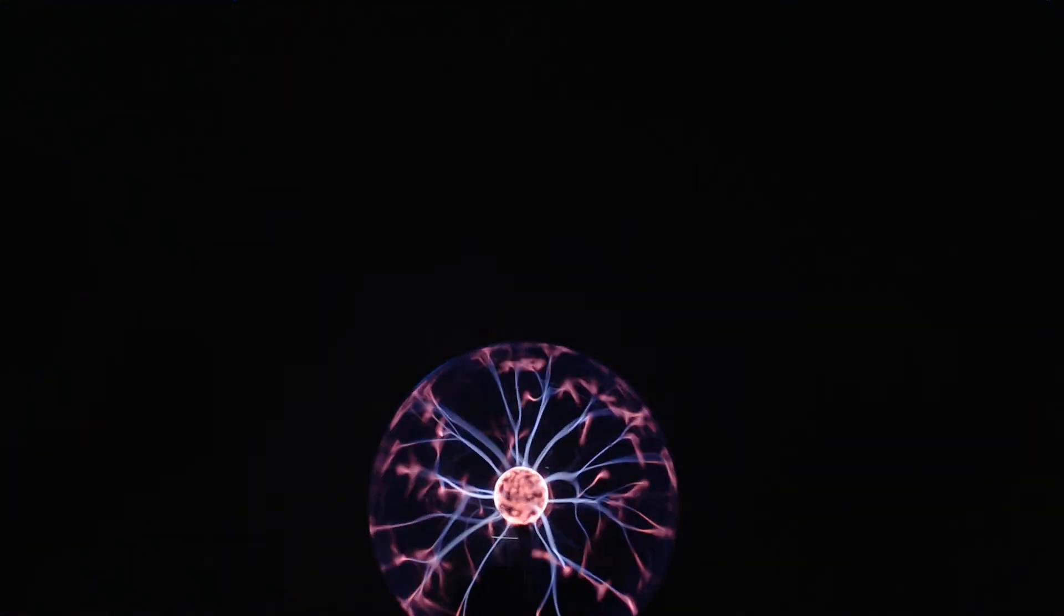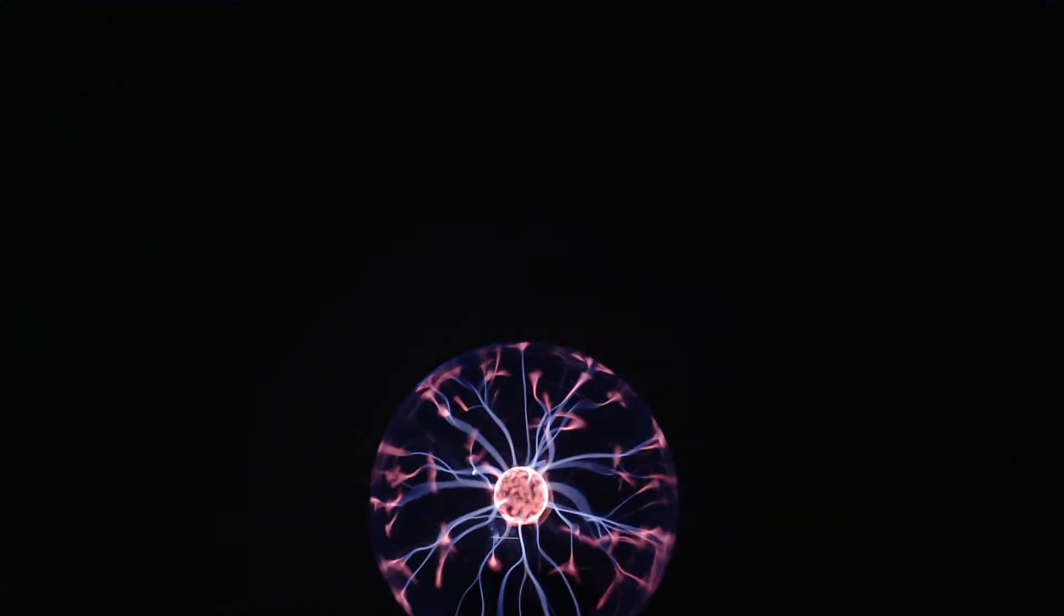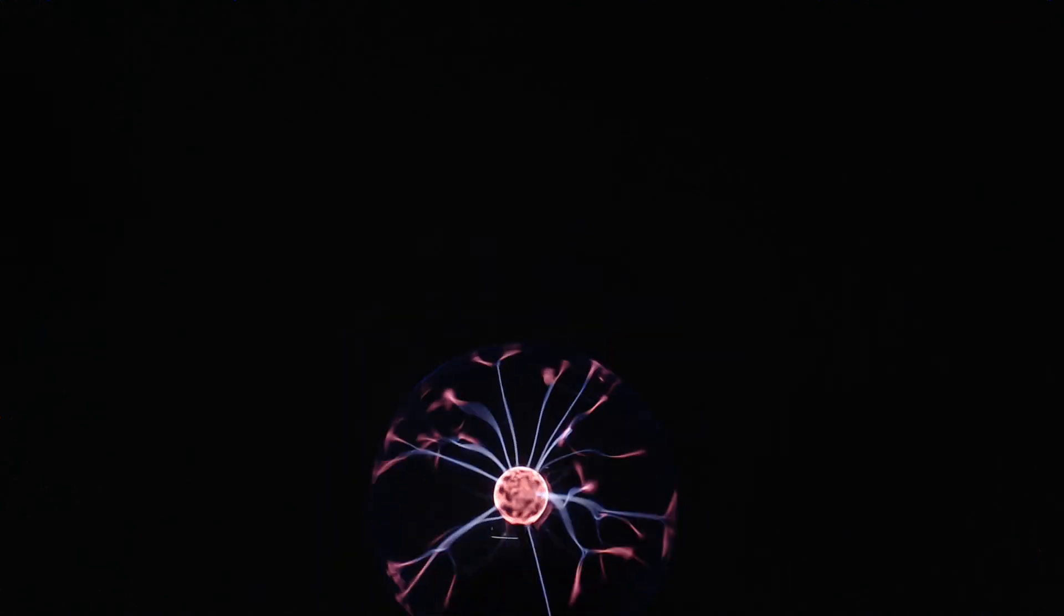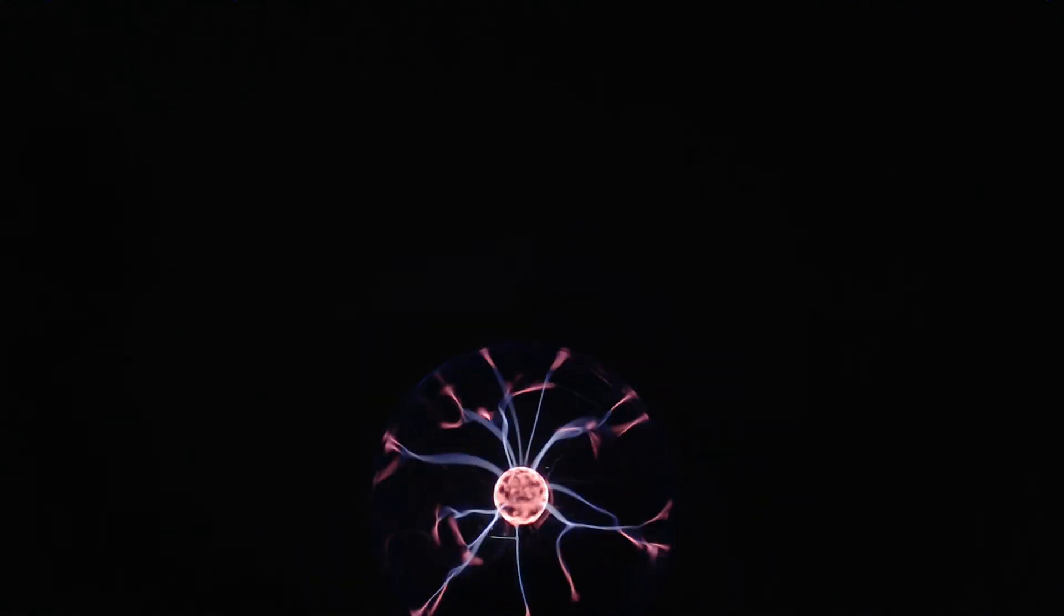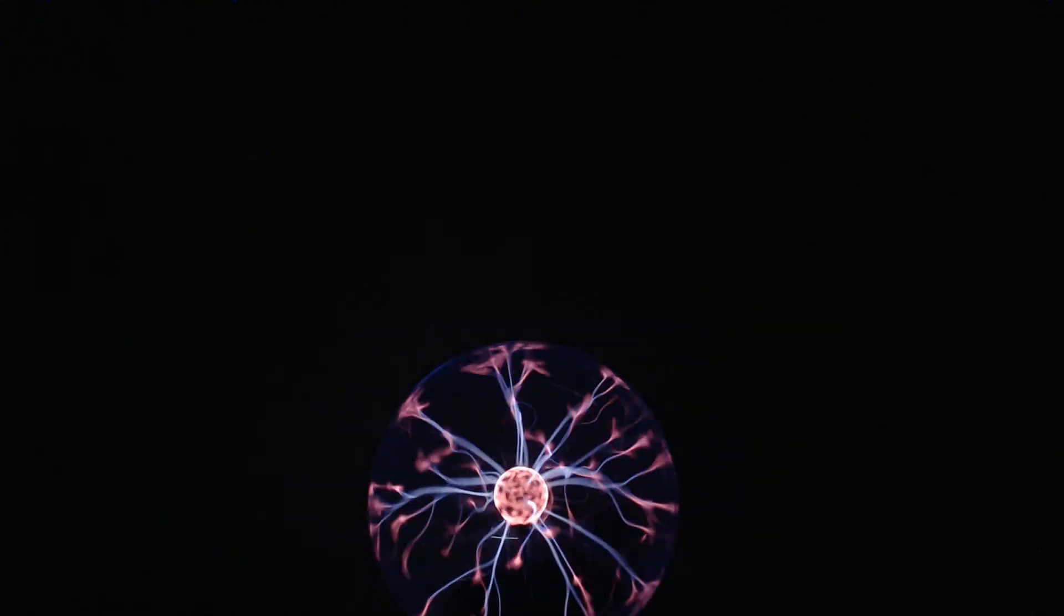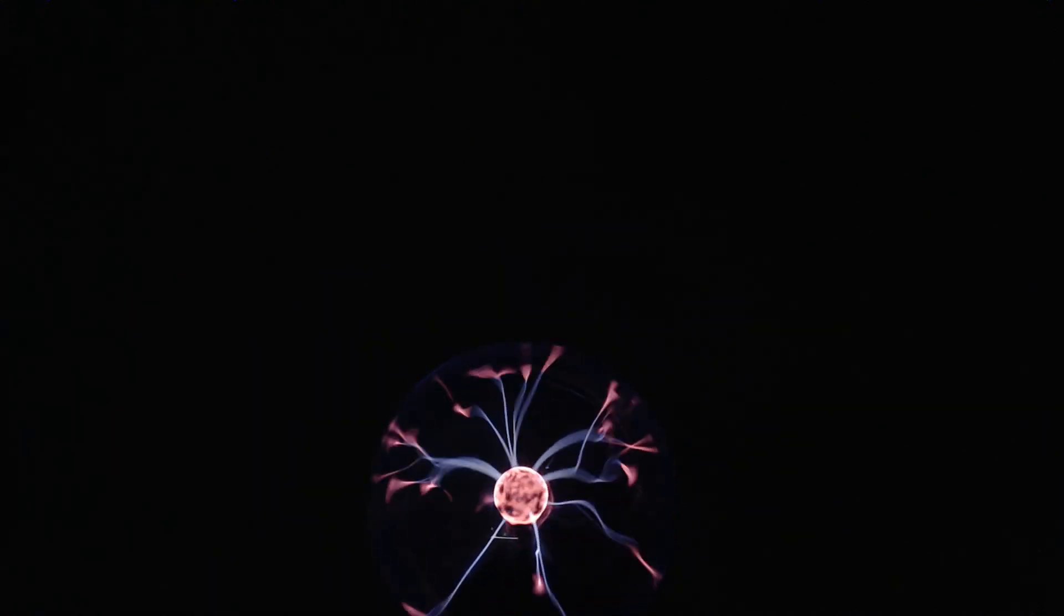Now, why does all this happen? Well, it's really all to do with that very high frequency alternating voltage that is placed on the ball in the center, which generates an electric field around the plasma globe.